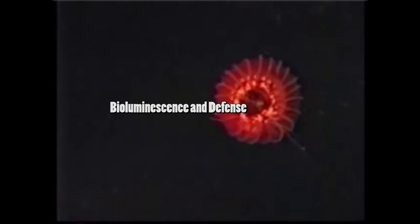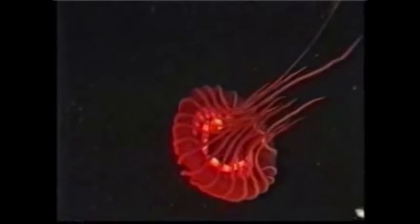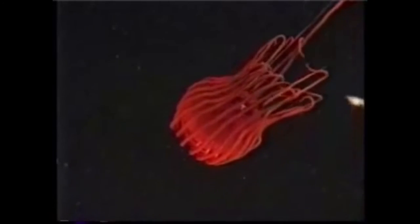Bioluminescence and defense. Like many deep sea creatures, Atolla wyvillei produce their own light, called bioluminescence. They use this ability differently than other sea creatures and animals, including the other five Atolla species of jellyfish.